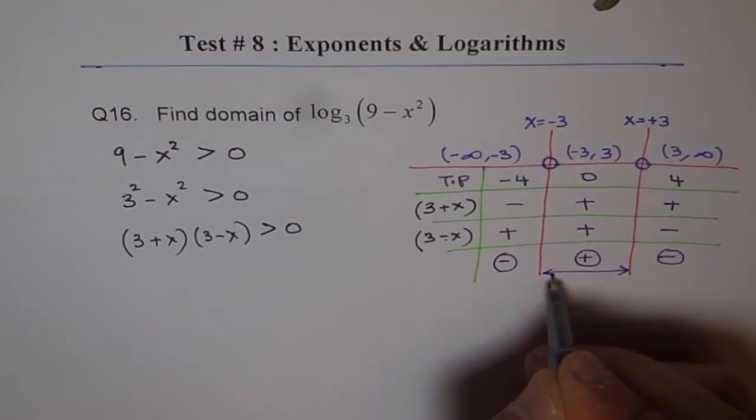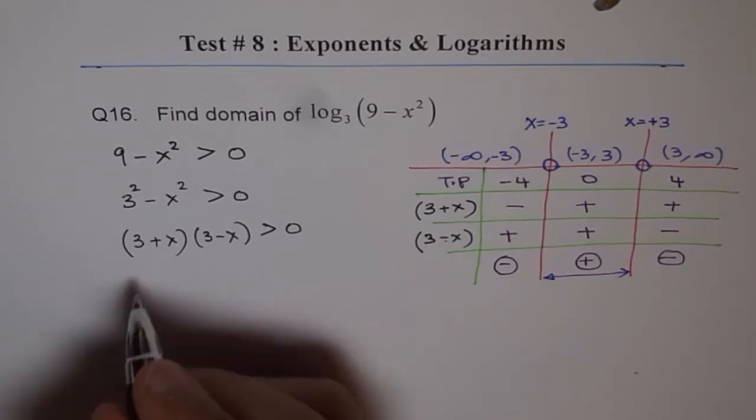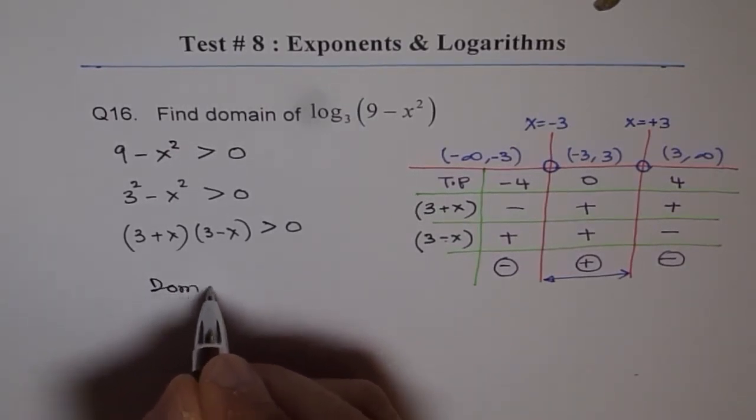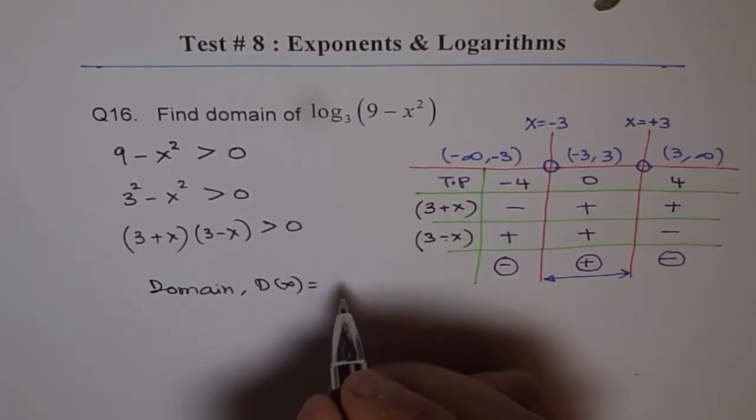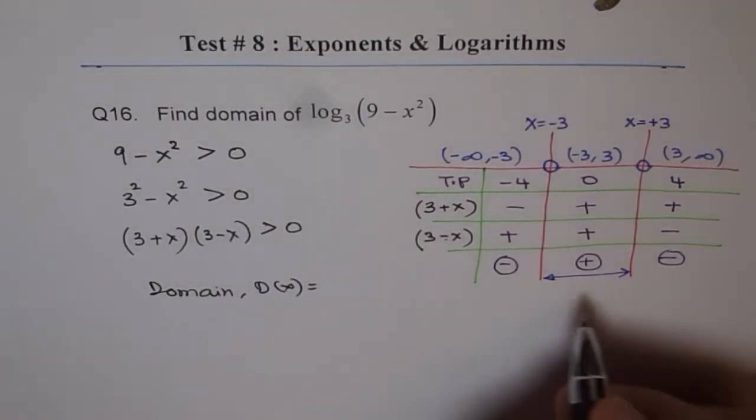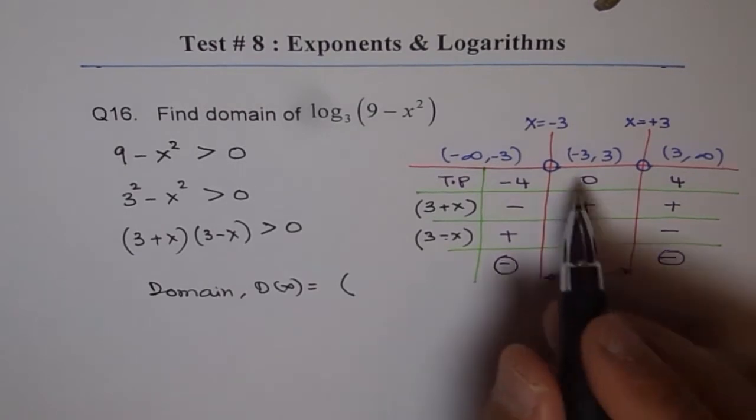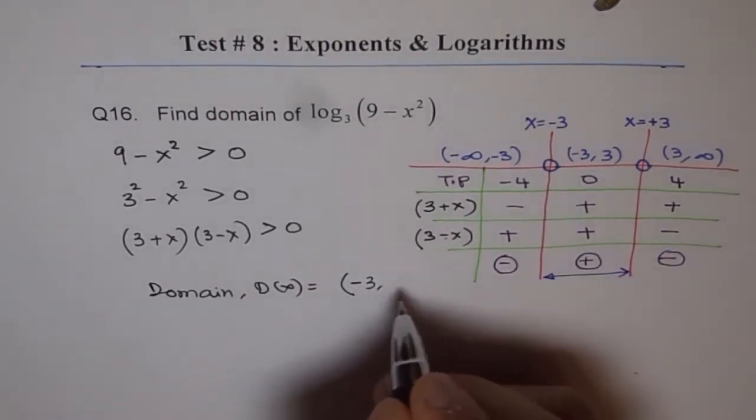So that means the domain of the function is all this. So it is between minus 3 to plus 3.